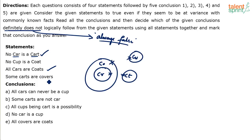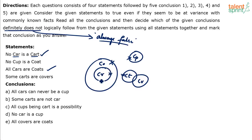Some carts are covers. One challenge in this question is not just finding the ones which are definitely false, but also that everything starts with 'C', so be careful. No car is a cart — considered. No cup is a coat — cup and coat do not touch each other, considered. All cars are coats — done. Some carts are covers.